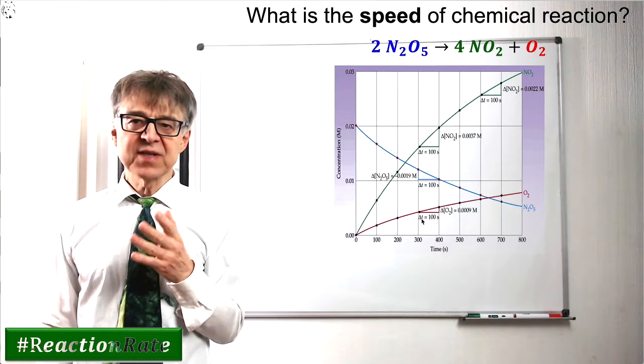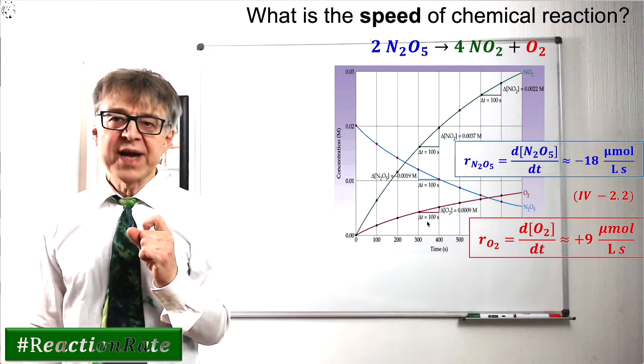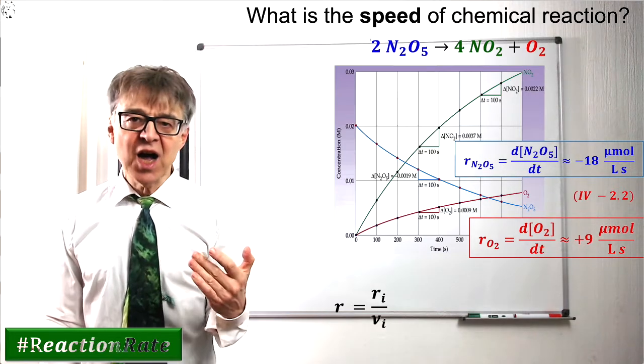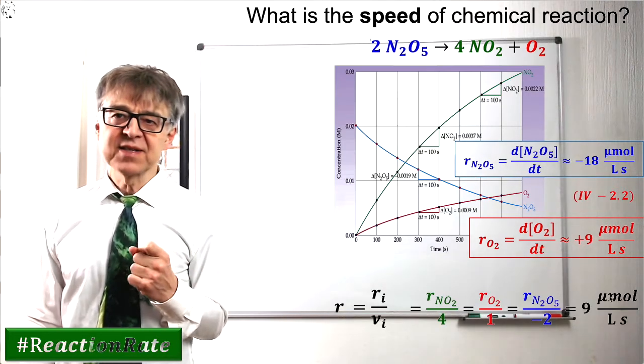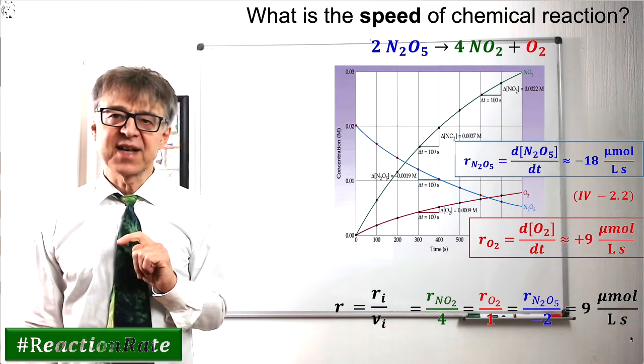After dividing these numbers by the respective stoichiometric coefficients, we end up with the reaction rate R, which is the same for all reactants, in our case R equals 9 micromoles per liter and second.